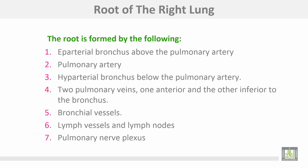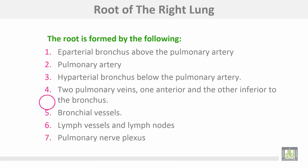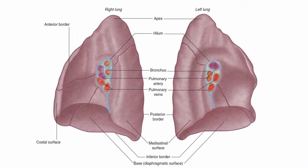The root of the right lung is formed by the following: an eparterial bronchus above the pulmonary artery, the pulmonary artery, a hyparterial bronchus below the pulmonary artery, two pulmonary veins — one anterior and the other inferior to the bronchus — bronchial vessels, lymph vessels and lymph nodes, and pulmonary nerve plexuses. This figure shows the roots of both lungs, the root of the right lung and the left lung, and the structures that lie in the root of both right and left lungs.